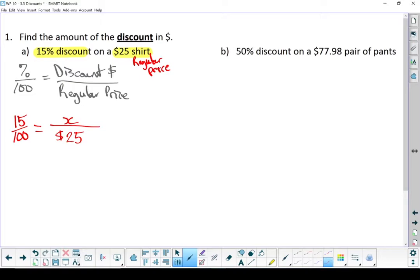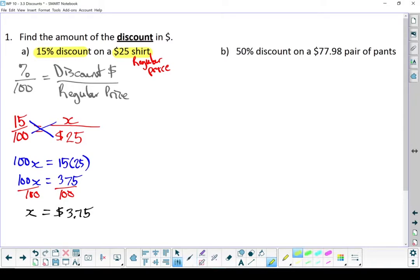And now let's solve that. Cross-multiplying, 100 times X equals 15 times 25. Divide both sides by 100, and X equals $3.75. You're saving $3.75.